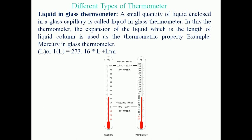Different instruments used for measuring temperature are called thermometers. For this syllabus, the liquid-in-glass thermometer, constant volume gas thermometer, and constant pressure gas thermometer are covered. In this session, only the liquid-in-glass thermometer will be discussed; the remaining thermometers will be discussed in the next session. In the liquid-in-glass thermometer, a small quantity of liquid (mercury or alcohol) is enclosed in a glass tube. When it comes into contact with a heat source, it expands, and the length of expansion is the thermometric property used for measuring temperature.